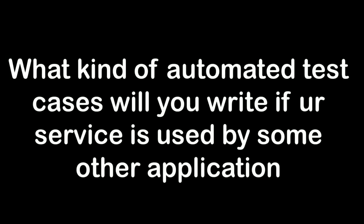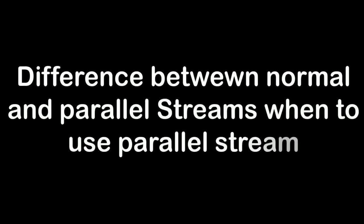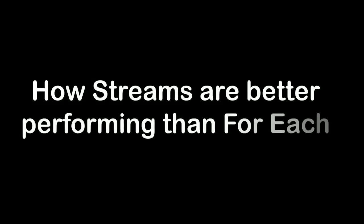The next question is: what kind of automated test cases will you write if your service is used by another application? Honestly, I'm not fully aware of what they're referring to — whether it's integration tests or something else. Following that, the question about the difference between normal and parallel streams in Java 8 came up, along with when to use parallel streams and how streams are better performing than a for-each loop.